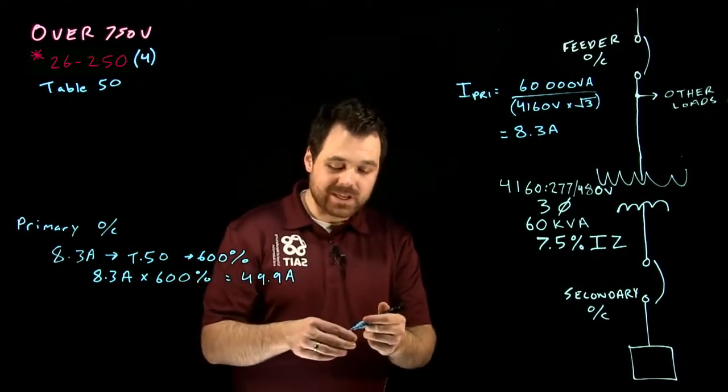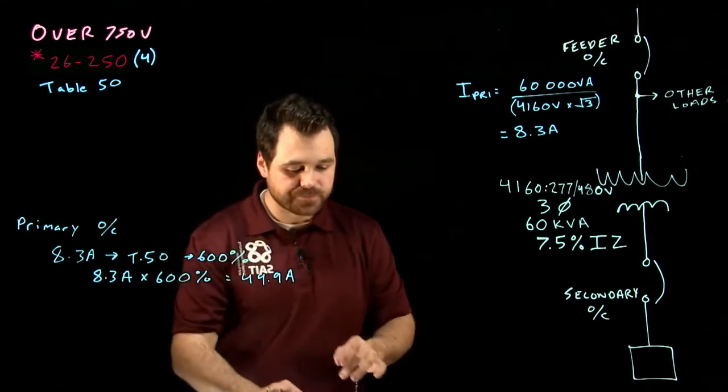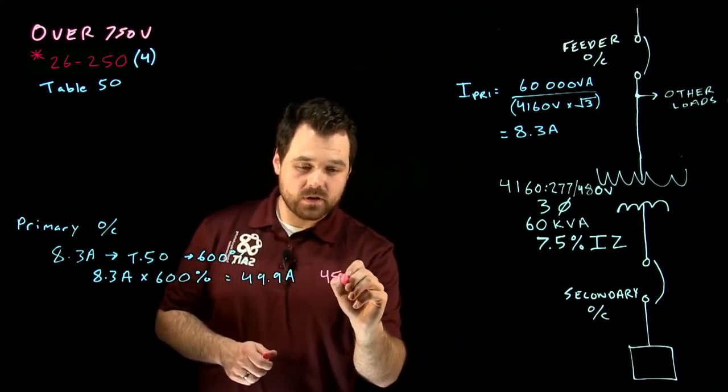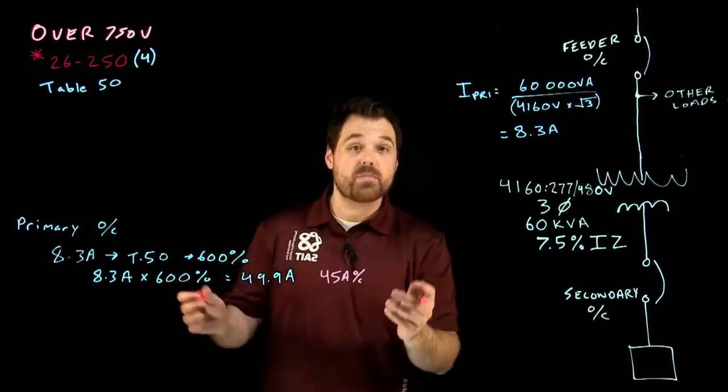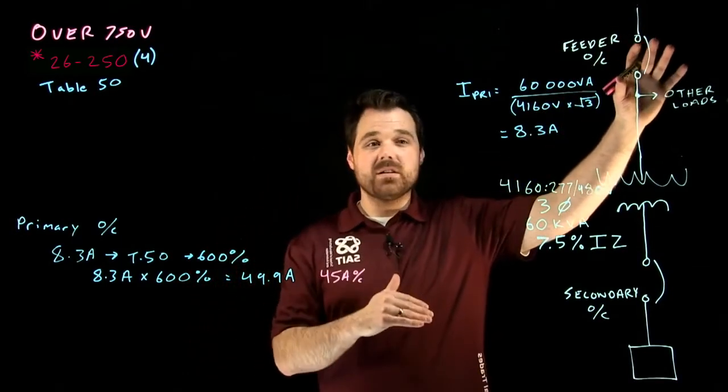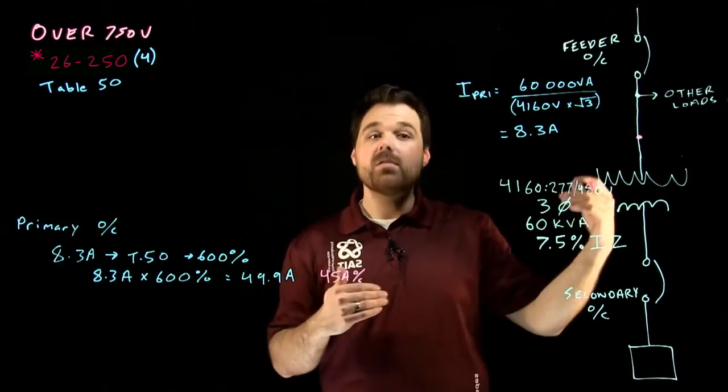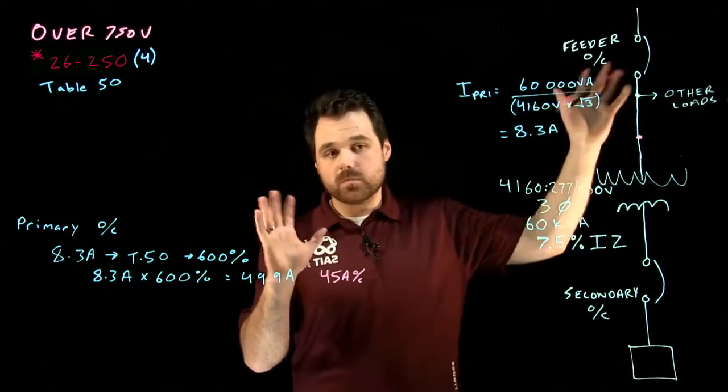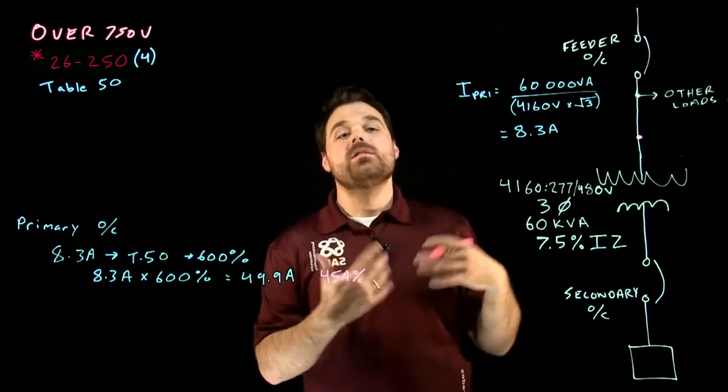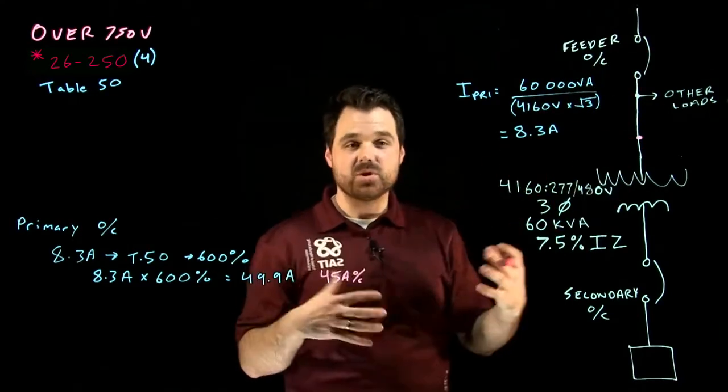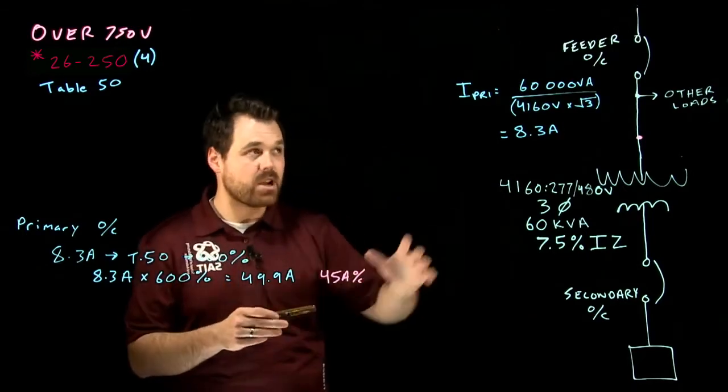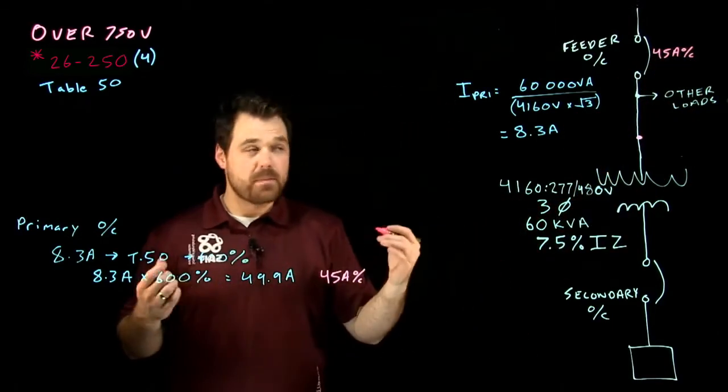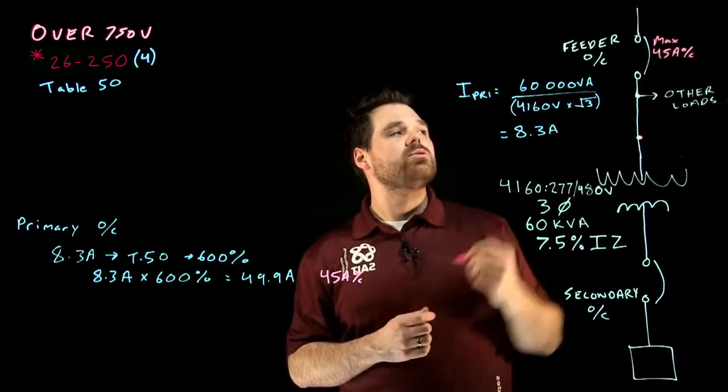The rule says we cannot exceed 600% the rated primary current. Once we take that to table 13, table 13 would tell us a 45 amp overcurrent device on the primary. So if this was greater than 45 amps, we would require one there based off of subrule 1 using that calculation. Either way, if this is 45 amps or less, then we are good to go and we do not need an additional individual primary overcurrent device. That's how we would size that or make sure that this one is okay. I'm going to say that this is 45 amps. That would be the max OC, 45 amps.